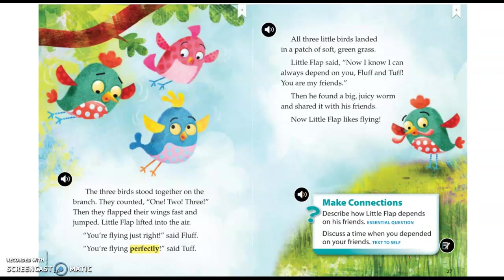The three birds stood together on the branch. They counted one, two, three. Then they flapped their wings fast and jumped. Little Flap lifted into the air. You're flying just right, said Fluff. You're flying perfectly, said Tuff. All three little birds landed in a patch of soft green grass. Little Flap said, now I know I can always depend on you, Fluff and Tuff. You are my friends. Then he found a big juicy worm and shared it with his friends.